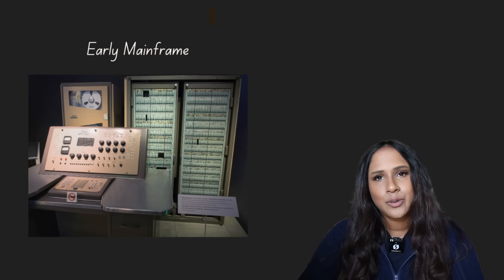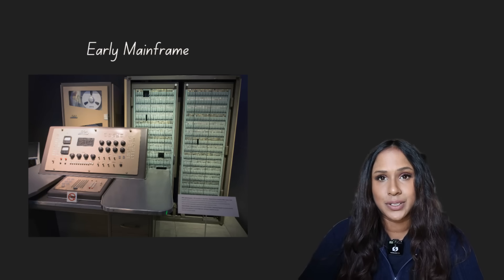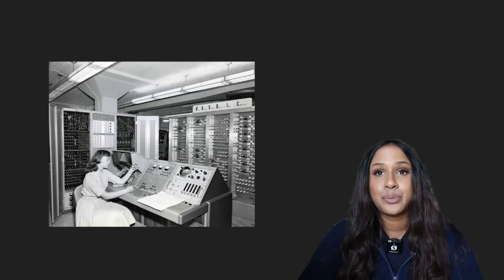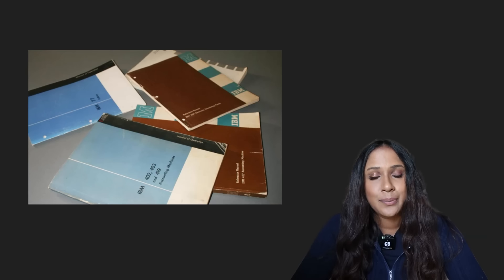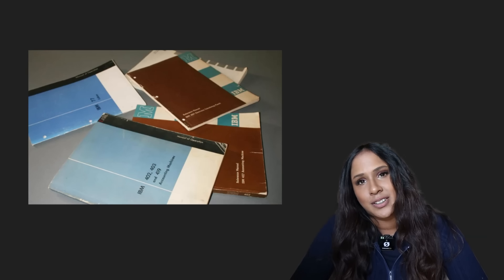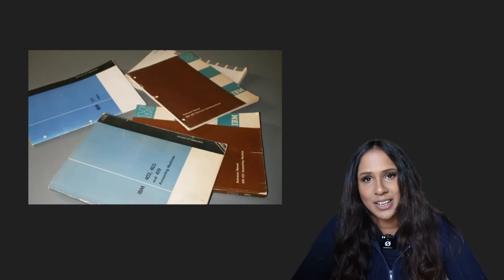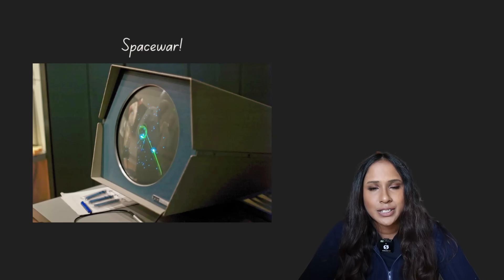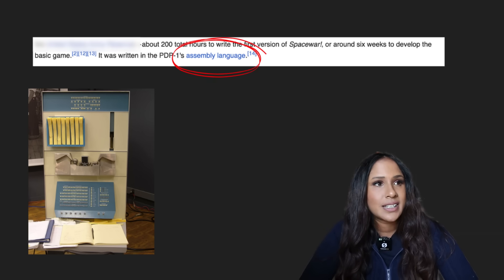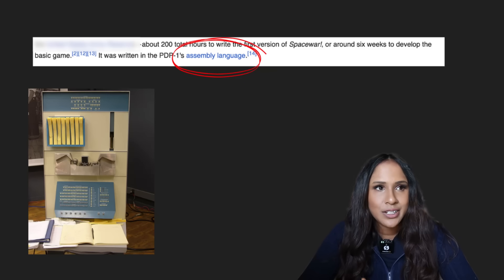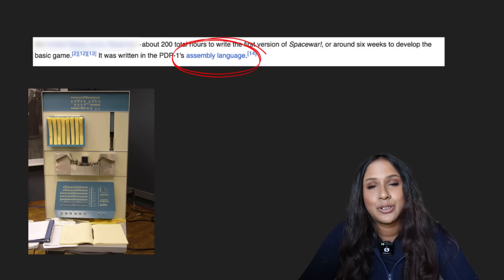By the 1950s, 1960s, assembly language was everywhere. It was the language to use for early mainframes and mini computers. If you were a programmer in those days, you would have lived and breathed assembly. But you had to because at that stage, there were no compilers for C++ or even Python yet. Companies like IBM distributed their computers with manuals of thick assembly instructions. And assembly was used for everything. Business applications, scientific calculations, even games. In fact, many of the first video games, like Space War, were written in assembly because nothing else could have direct control of the hardware needed for the game to actually be used.